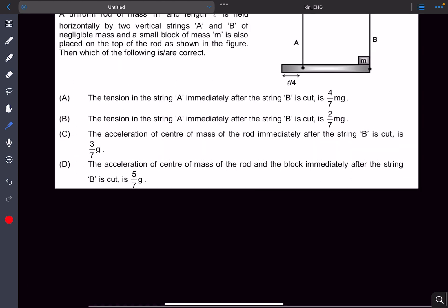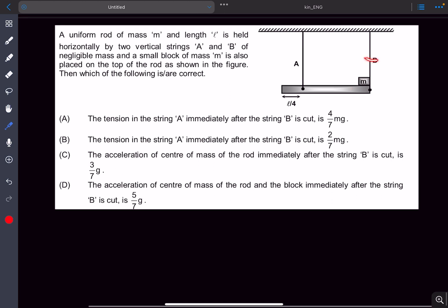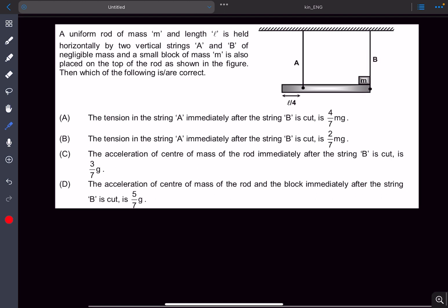Now the mistake that most people actually make in this problem is that they assume the contact between this mass M and this rod is still existing after cutting off string B. They assume that the mass M will still be in contact with the rod, and that's the mistake that most people make.